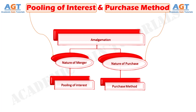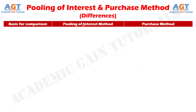In pooling of interest method, the assets and liabilities are recorded at their carrying amounts in the books of the transferee company, whereas in purchase method, the assets and liabilities of the acquired company are recorded in the books of the acquiring company at their fair market value as on the date of acquisition. Let's look into the basic differences between pooling of interest method and purchase method in a tabular form.